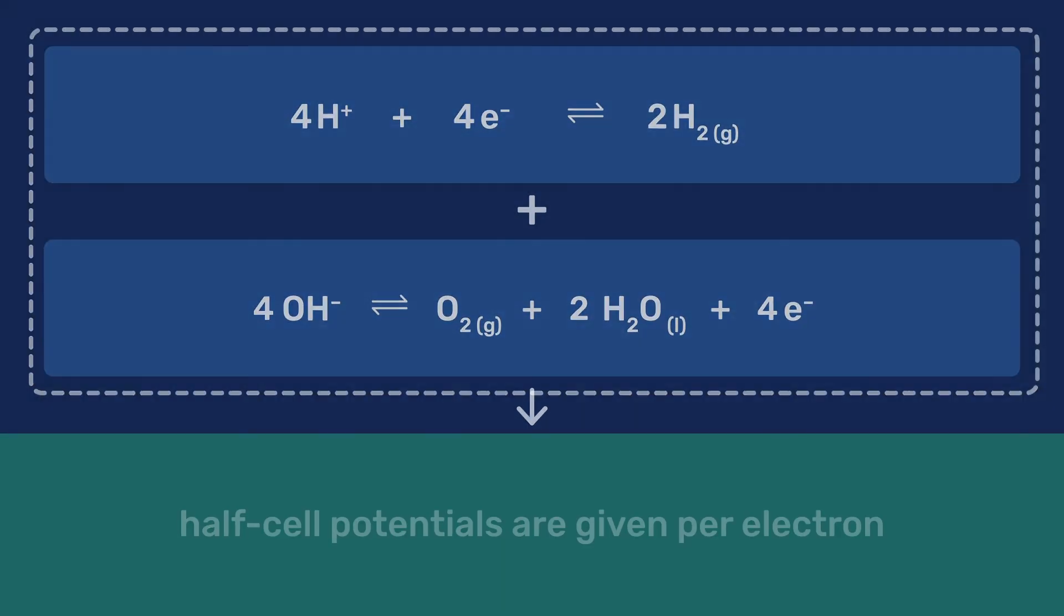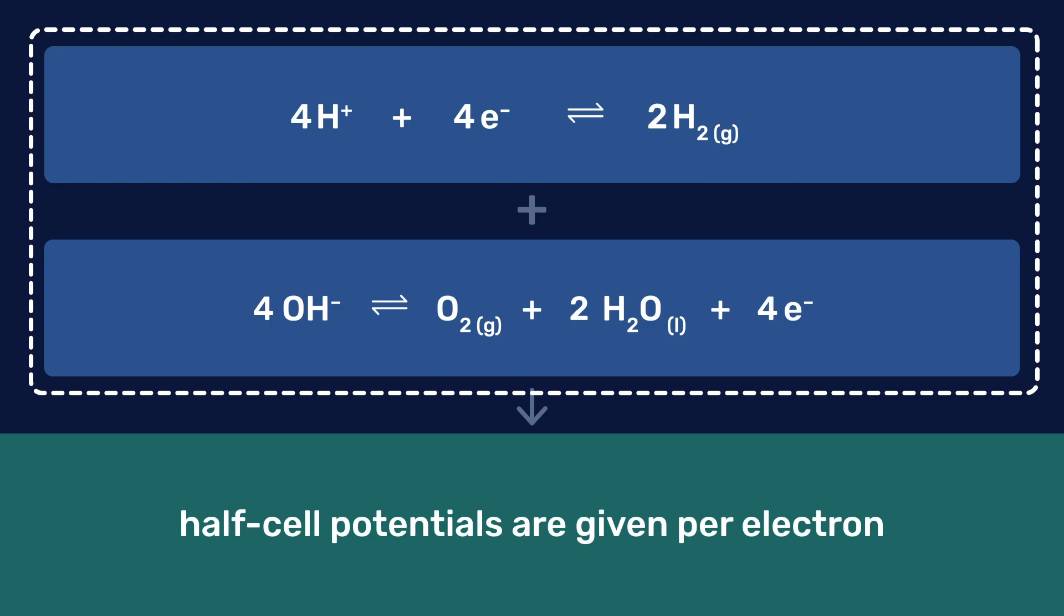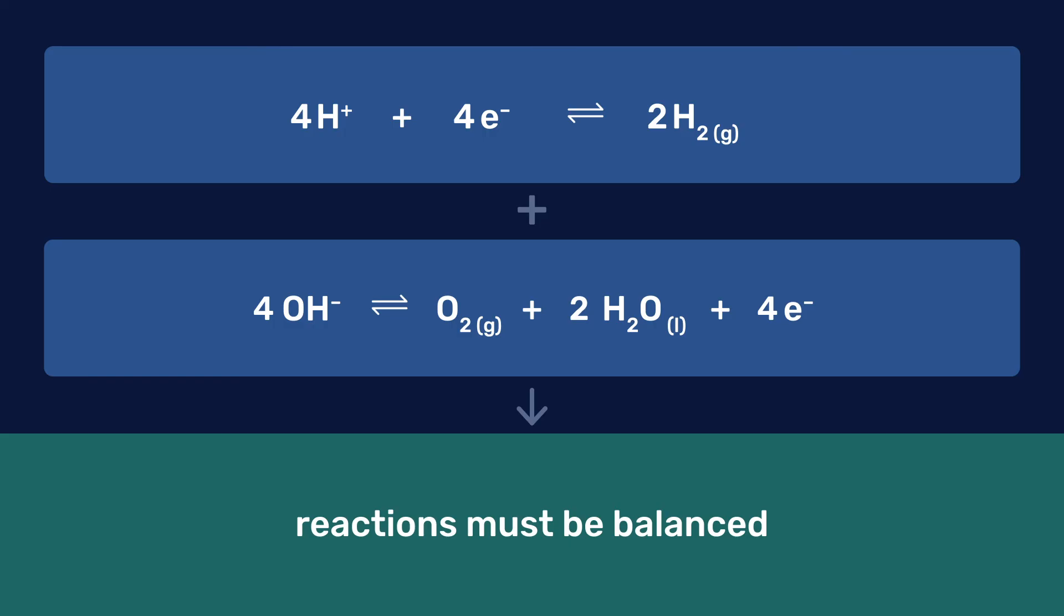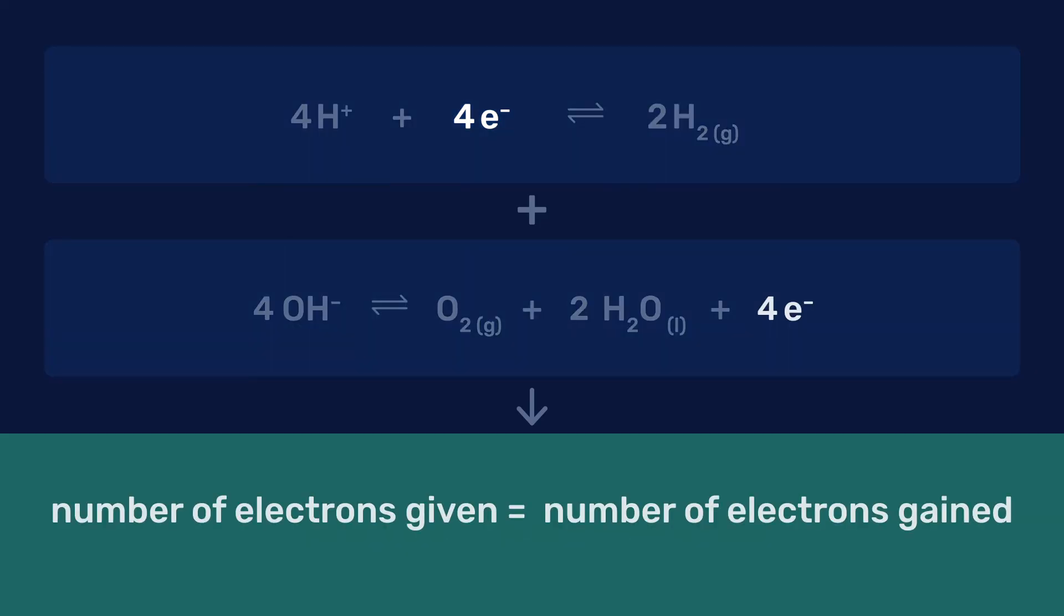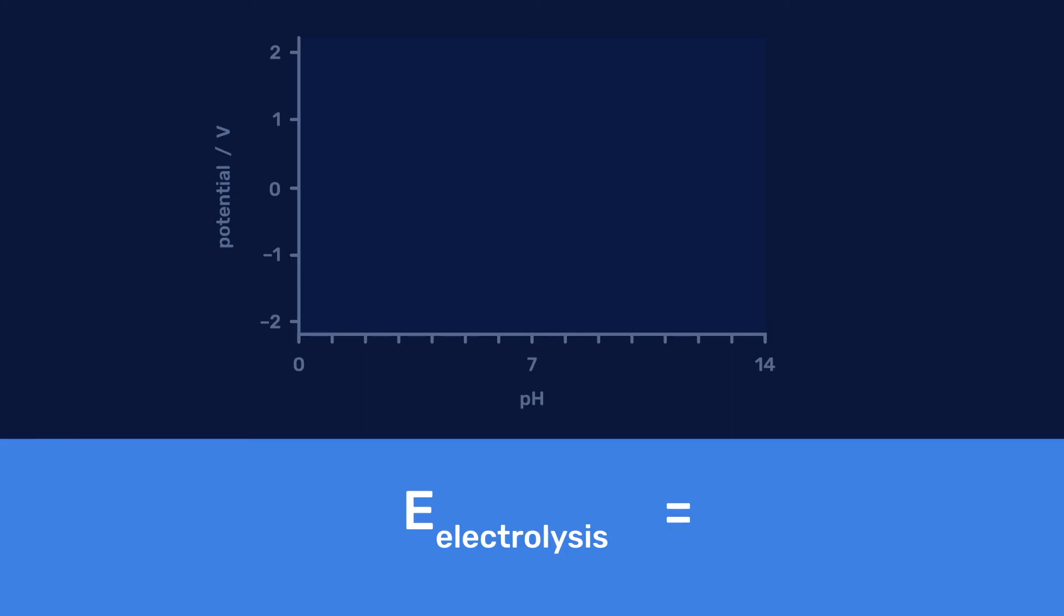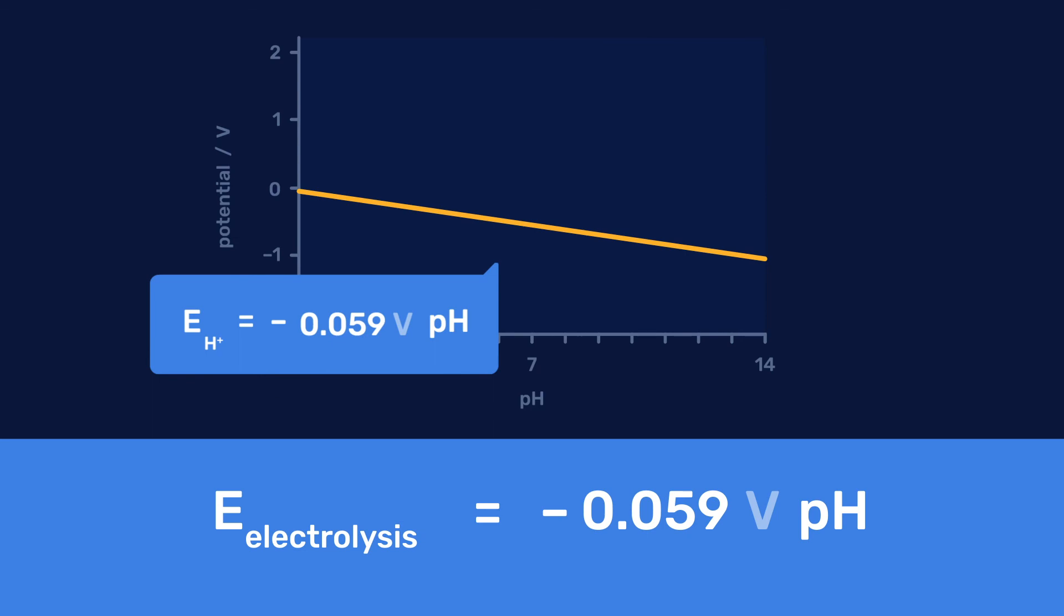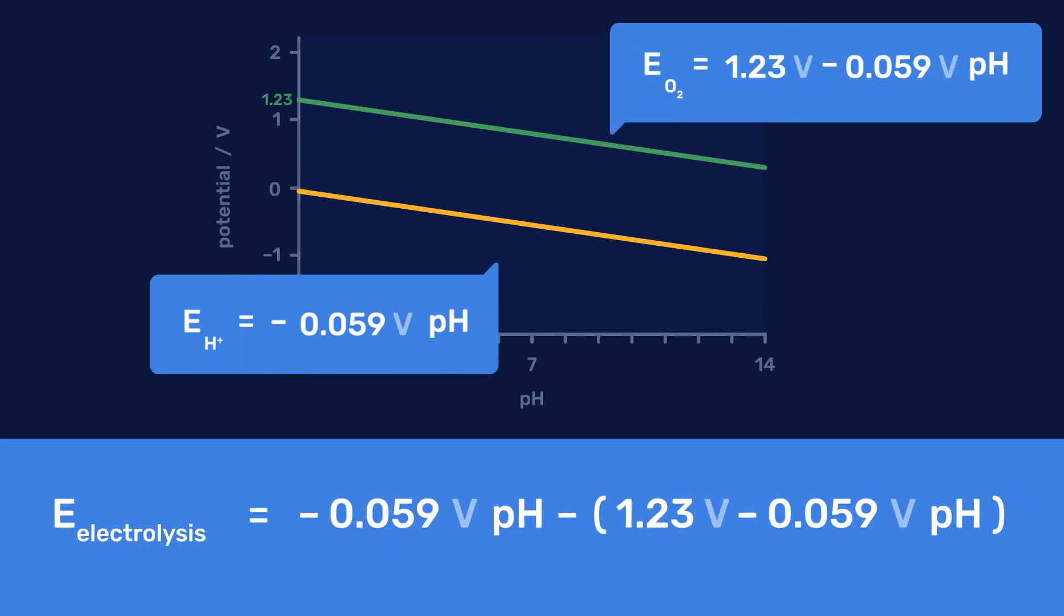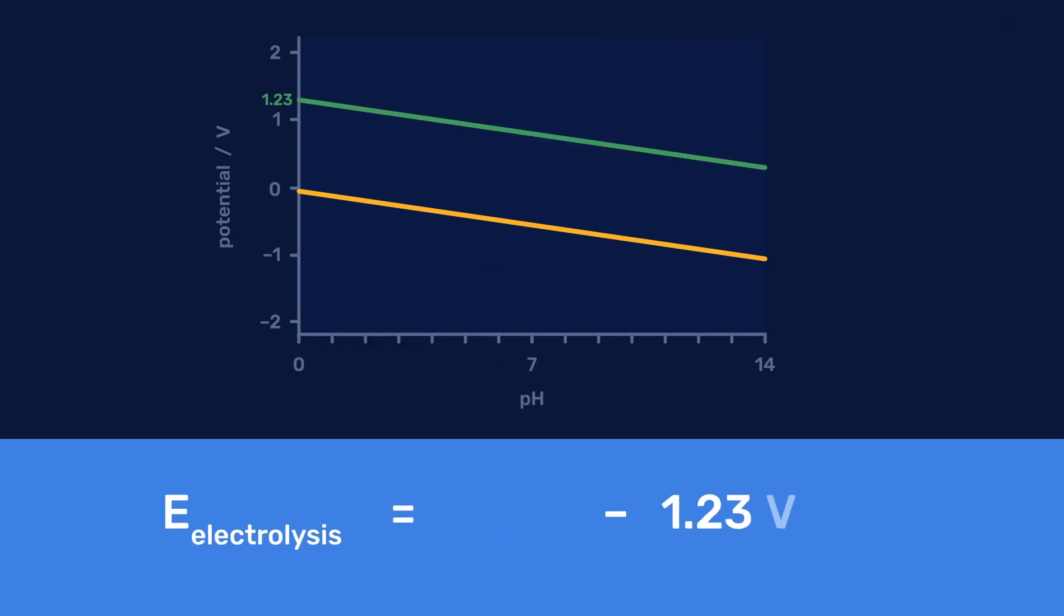Half-cell potentials are given per electron, and can only be directly combined for balanced reactions, for which the number of electrons given and gained are equal. As this is the case for the hydrolysis of water, the potential for this reaction is simply the difference between the reduction half-cell potentials for the proton and for oxygen. This turns out to be -1.23 volts, and in this case does not depend on pH.